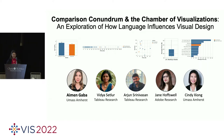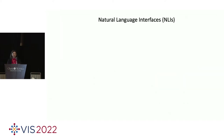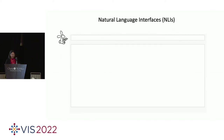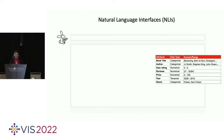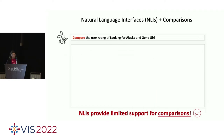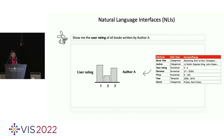My name is Eamon Gaba, and this work is done in joint collaboration with my wonderful co-authors: Vidya Settler and Arjun Trinuelson from Tableau, Jane Houseville from Adobe, and my advisor Cindy Sean. Natural language interfaces are becoming very popular, both in visualization research and as commercial products. At a high level, given a dataset, natural language systems allow people to ask queries in plain language, and the system recommends a visualization that helps answer that query. While these systems have evolved to support a variety of basic statements, they provide very limited support for comparisons.